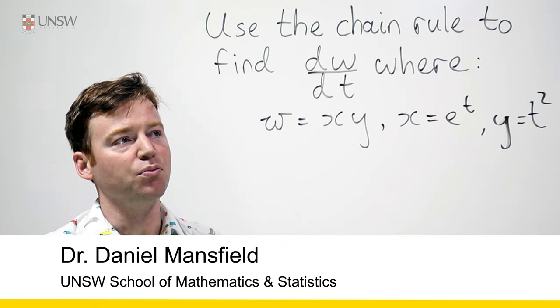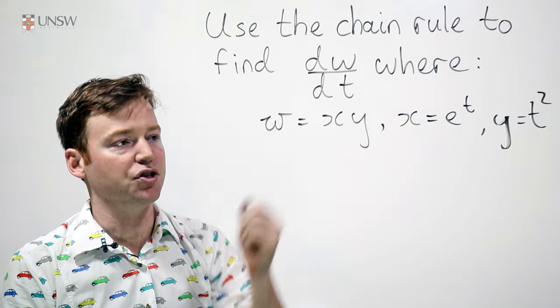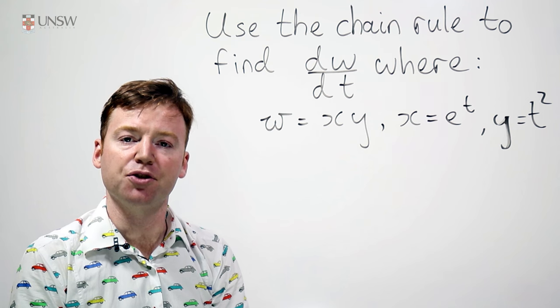Hello, here we have a question which asks us to find dw/dt, where w is just x times y, and x and y are themselves functions of t.